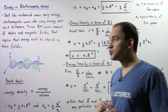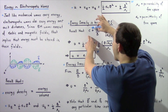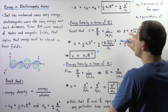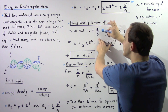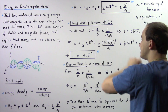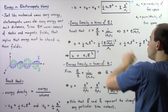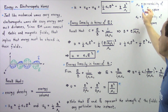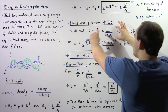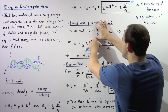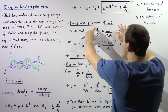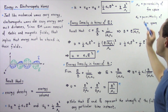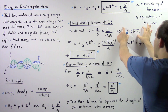Recall from a previous lecture that the speed of our electromagnetic wave in empty space, c, is equal to the ratio of the electric field E and the magnetic field B, and this equals 1 divided by the square root of the product of epsilon naught and mu naught. Using this relationship, we can express the magnetic field B in terms of the electric field E and these two constants.